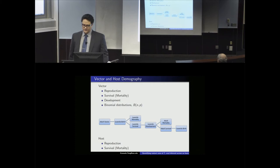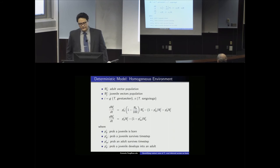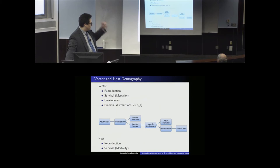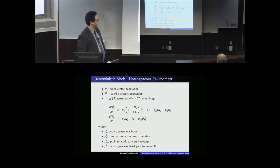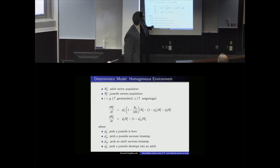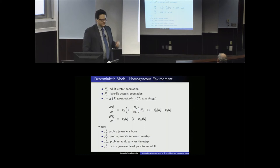For hosts, demography is simpler — just birth and death. I built a deterministic ODE model alongside the agent-based model to understand the demography and serve as a validation check. This proved quite helpful when I had an error causing a population to blow up in the code — the ODE showed that shouldn't happen. The ODE tracks the change in juvenile vector population as births minus deaths minus development, and the adult vector population as those that develop minus those that die.